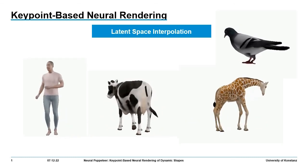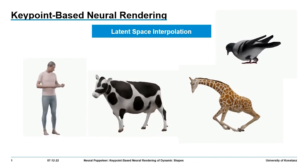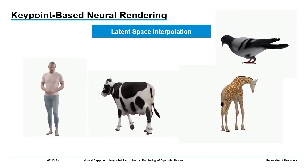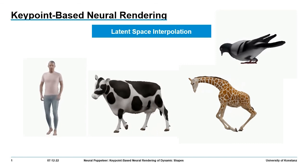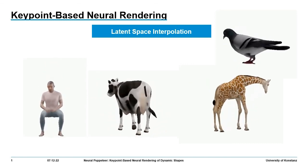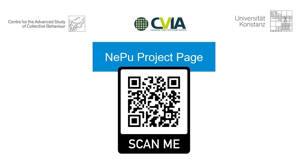Last but not least, the structure of Nepu's latent space encodes meaningful information about how individual poses are related to each other. For code, our synthetic dataset, and further results, please visit our project page by scanning the QR code.